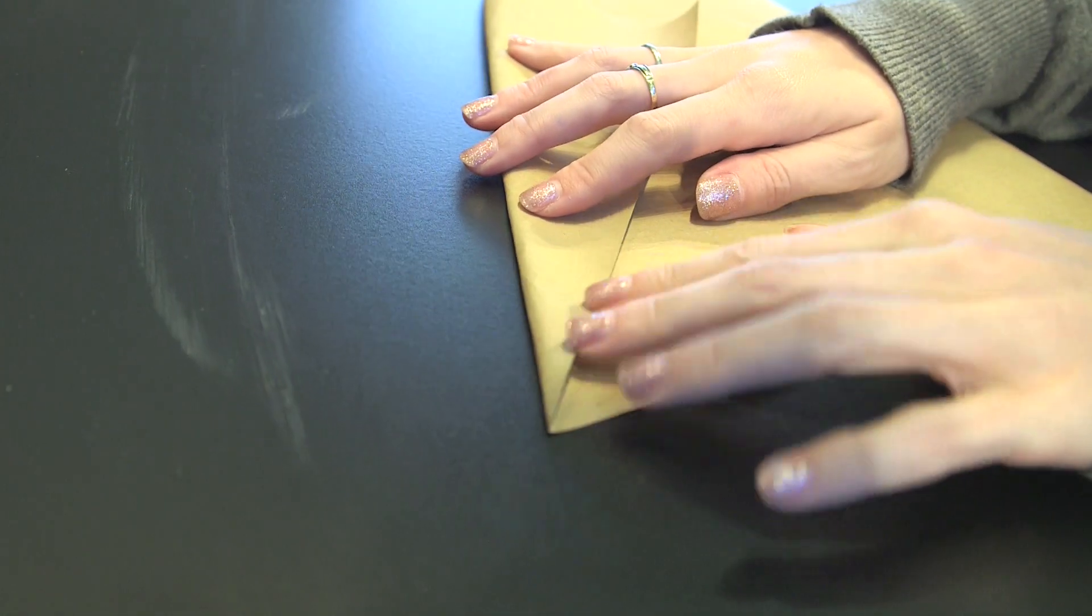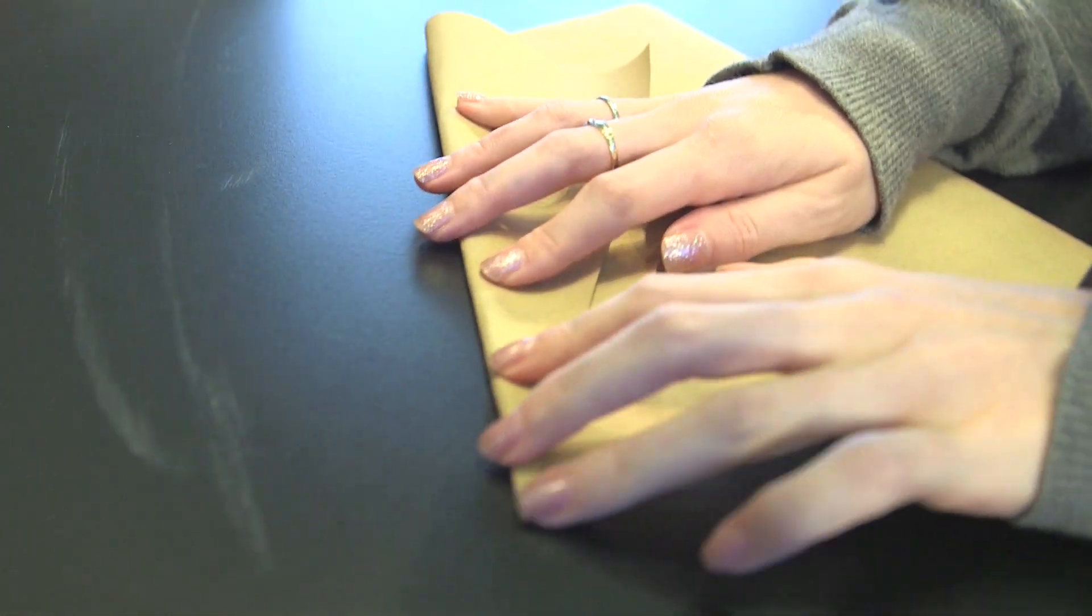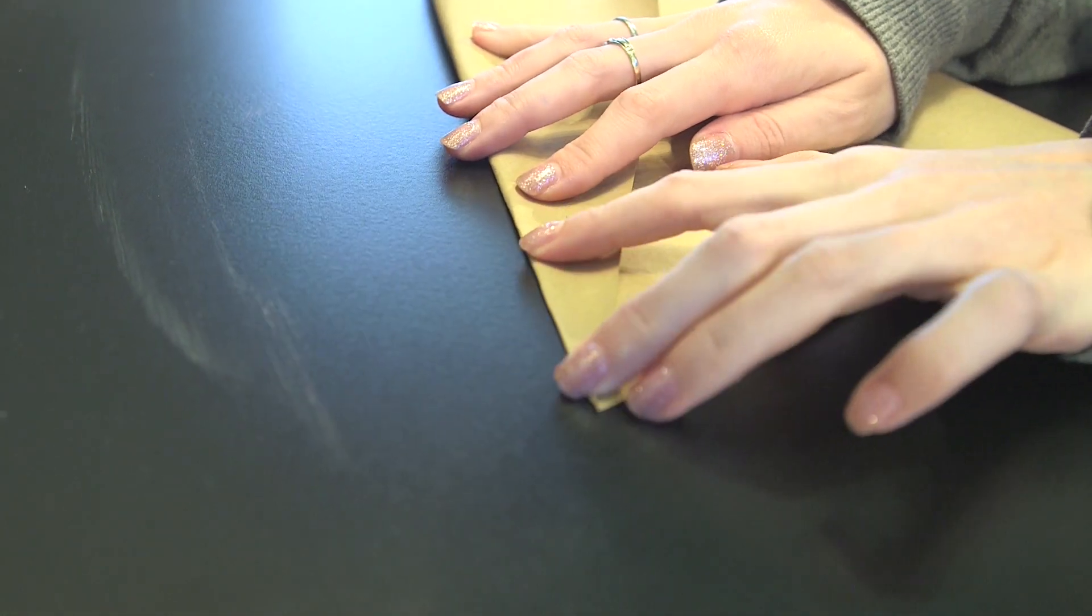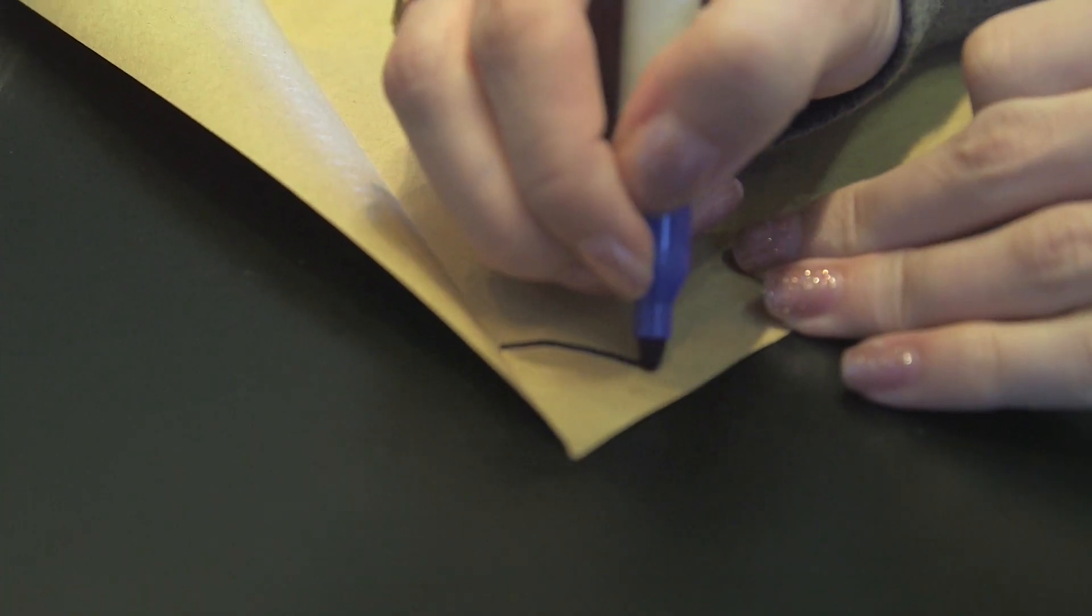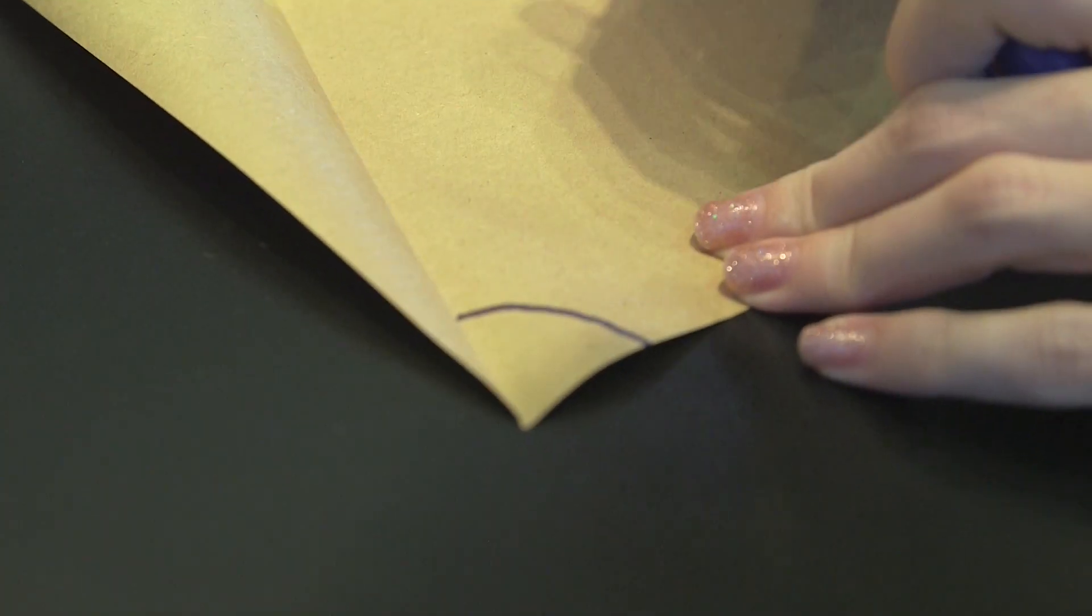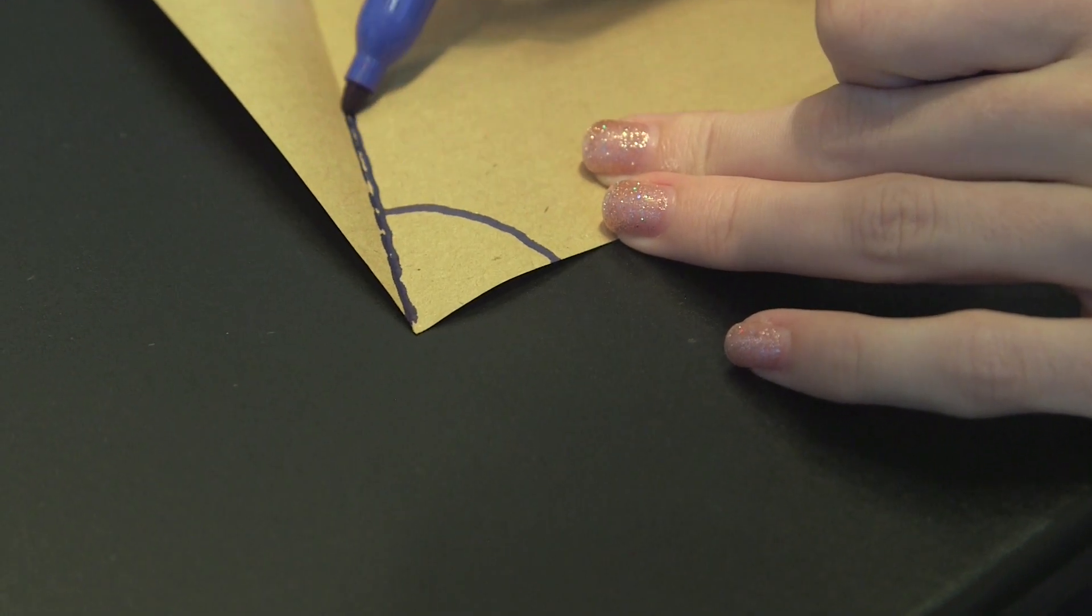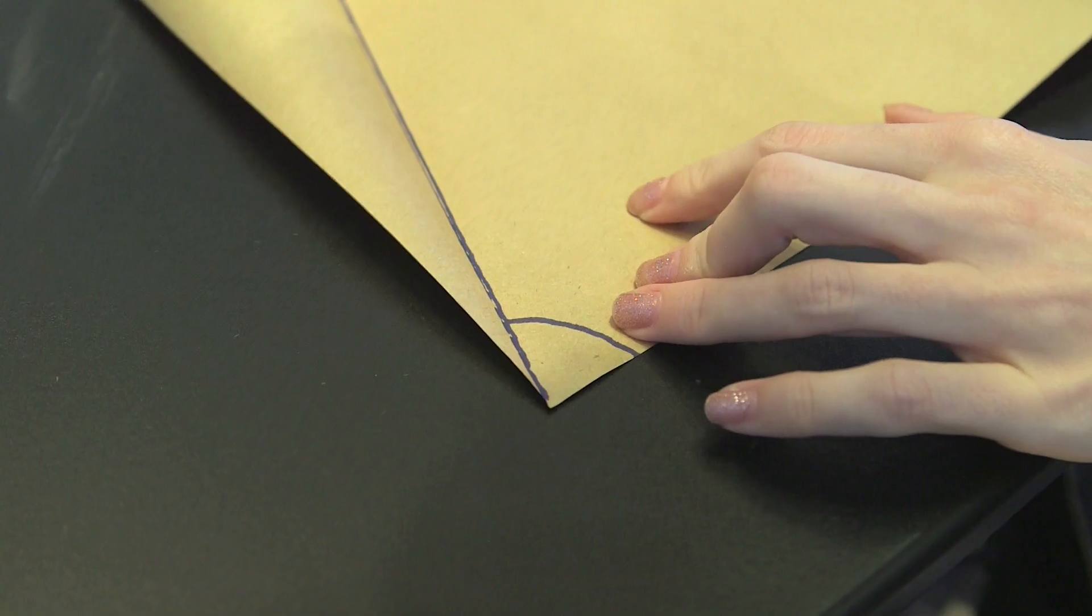So I'll just fold the paper so that the bottom of this crease is right at the corner. So this is the angle. We created it arbitrarily. We don't know how big it is. So I'll try to draw a line just inside the crease. You're going to trisect that. I'm going to trisect that.